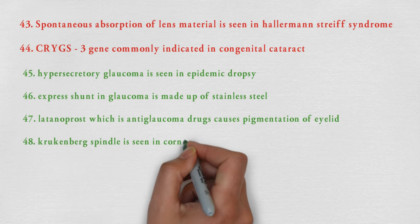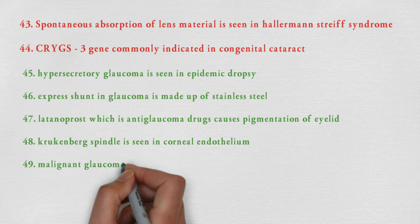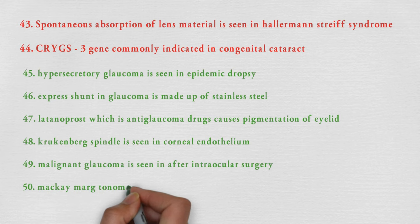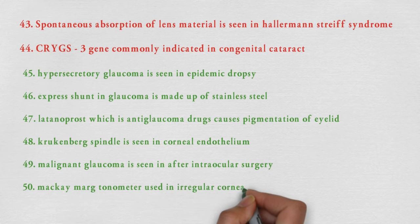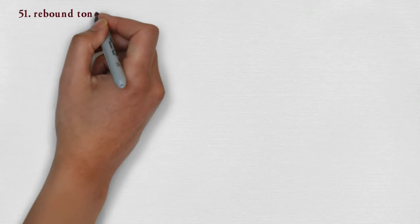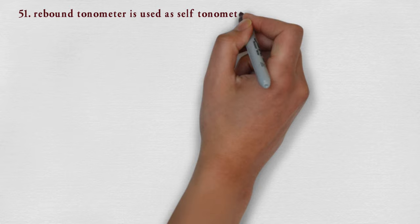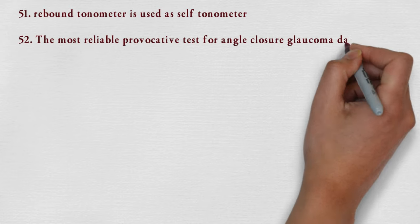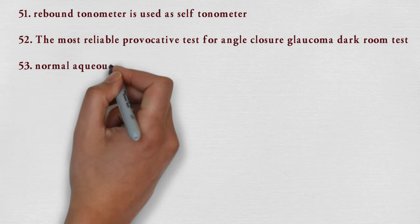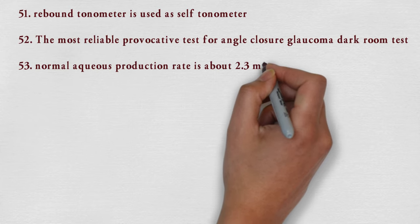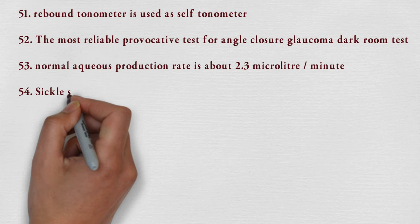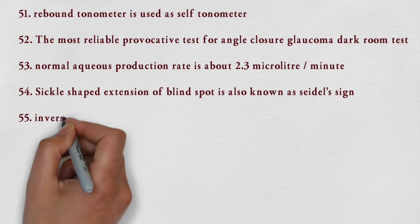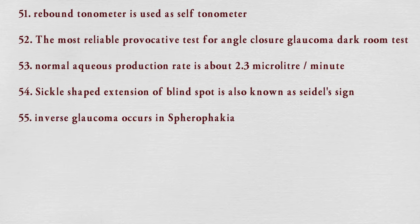Krukenberg spindle is seen in corneal endothelium. Malignant glaucoma is seen after intraocular surgery. Mackay-Marg tonometer is used in irregular cornea. Rebound tonometer is used as a self tonometer. The most reliable provocative test for angle closure glaucoma is the dark room test. Normal aqueous production rate is about 2.3 microliters per minute. Sickle-shaped extension of blind spot is also known as Seidel sign.